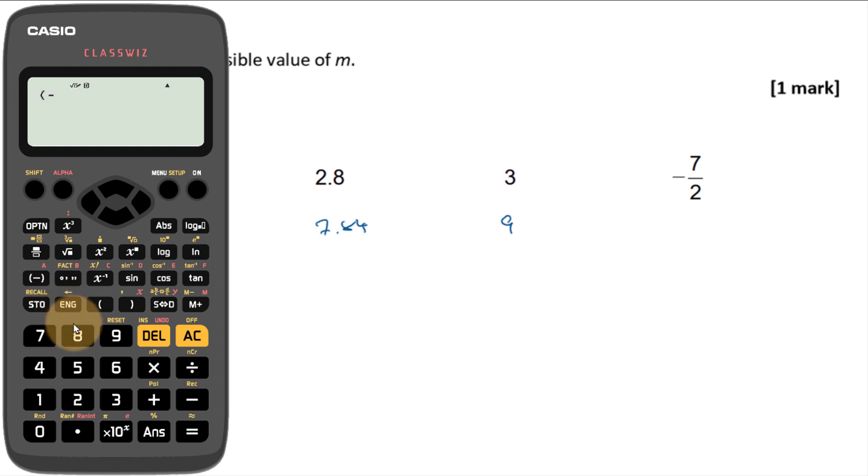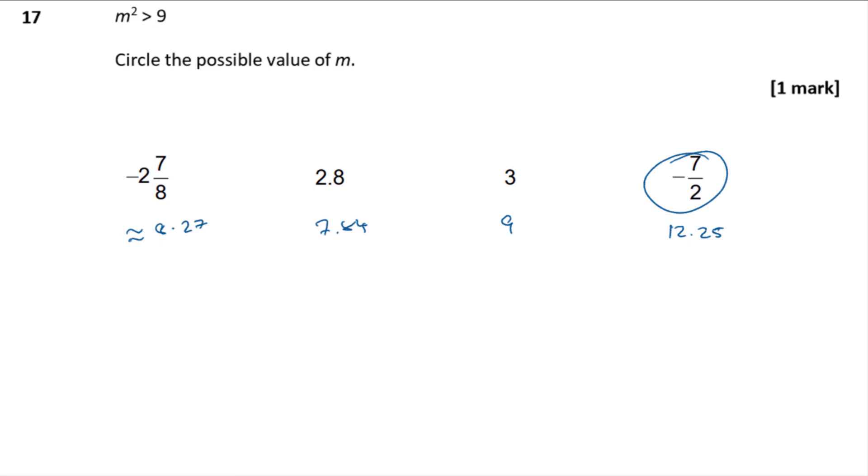If you've got negative 7 over 2 and you square it, that gives me 12.25. Now I've spotted that one straight away because 7 over 2 is 3 and a half and when you square a negative number it's still going to give you a positive one. So I could spot that that one was going to be the right answer.